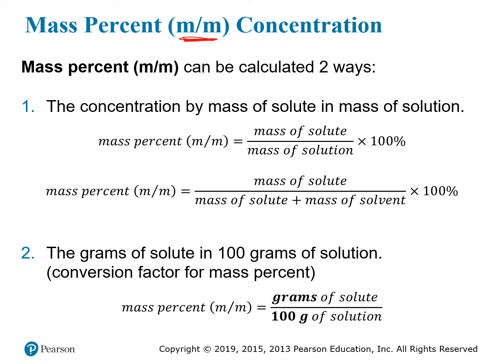We can calculate mass percent two different ways. The formal definition is that mass percent equals the mass of the solute divided by the total mass of the solution, multiplied by 100 to turn it into a percentage. You can measure the mass in any convenient unit — grams, kilograms, or even pounds — as long as the unit for the solute mass is the same as for the solution mass, so they cancel out. Also note that the mass of the solution equals the mass of the solute plus the mass of the solvent, since mass is conserved. Sometimes you're given the individual components and you have to add them together to get the total solution mass.